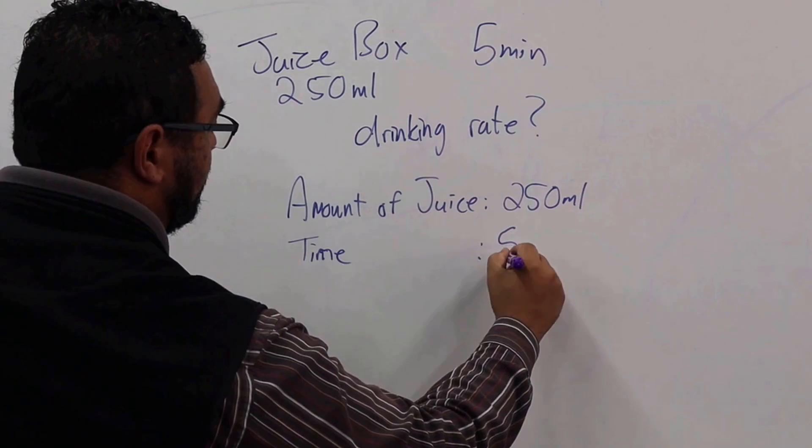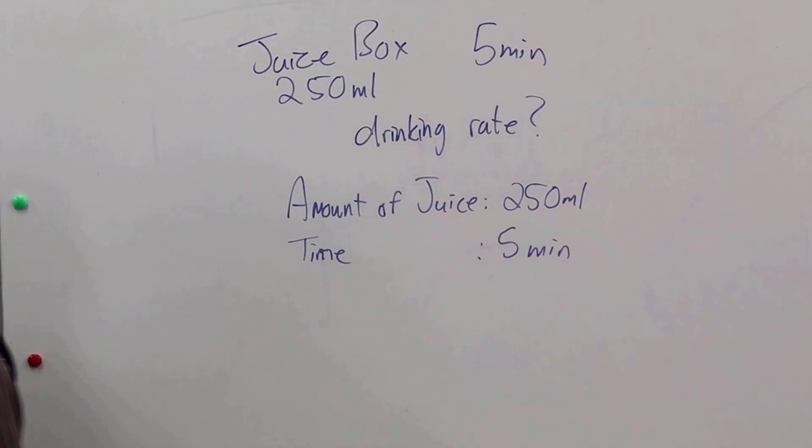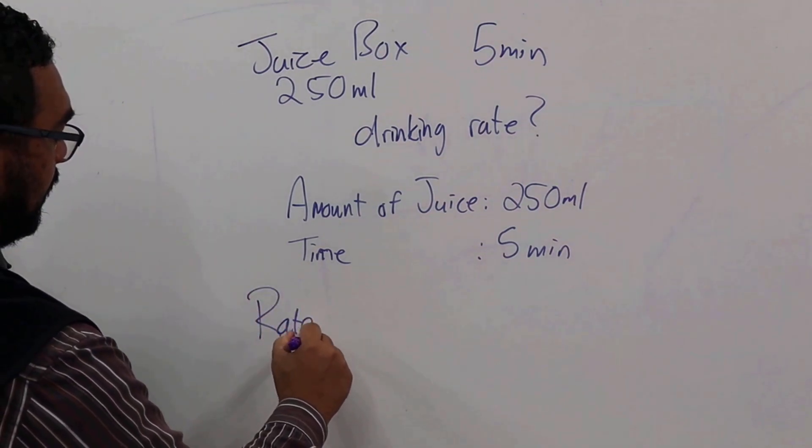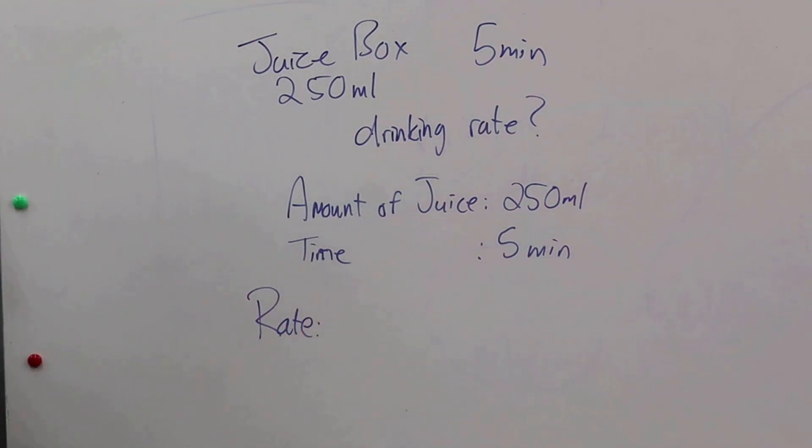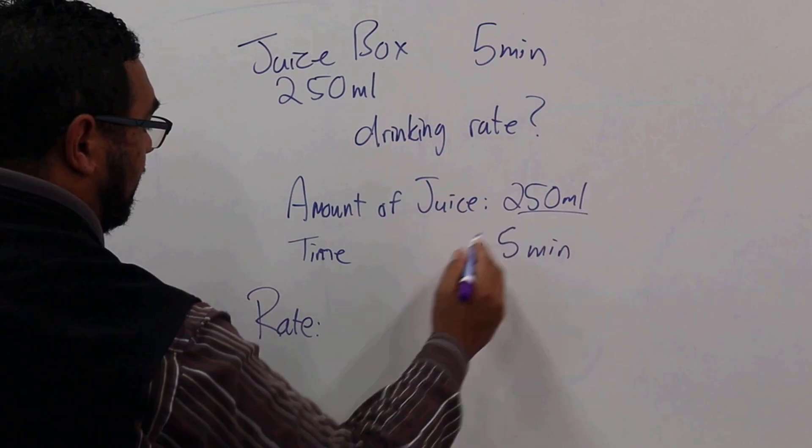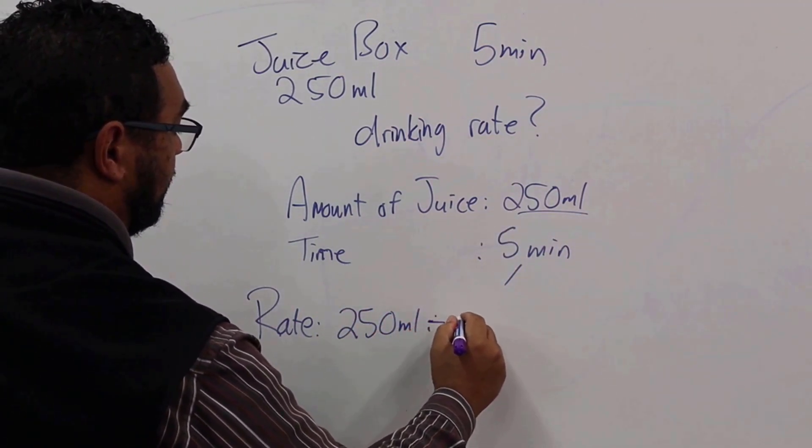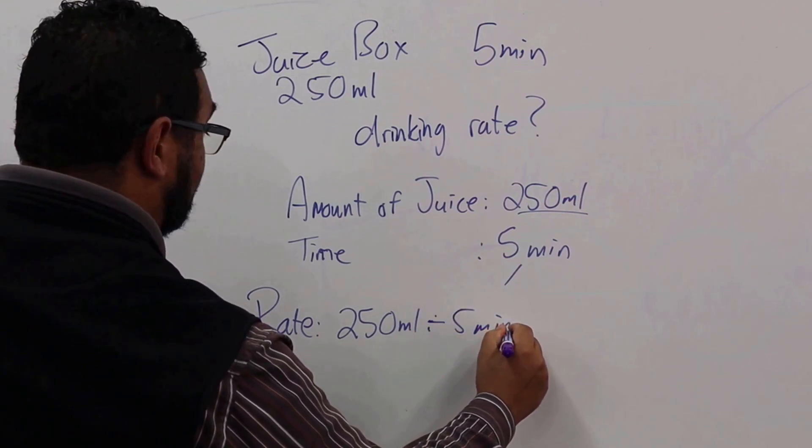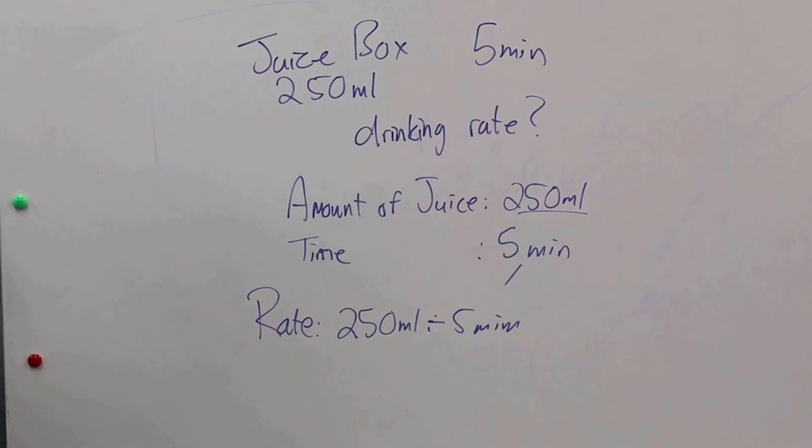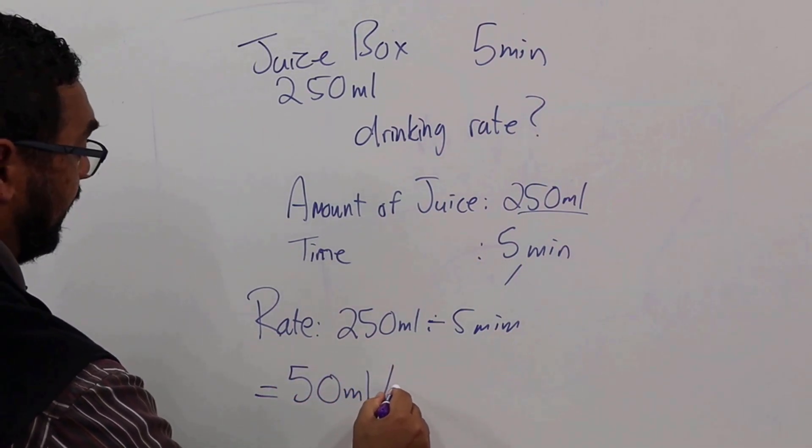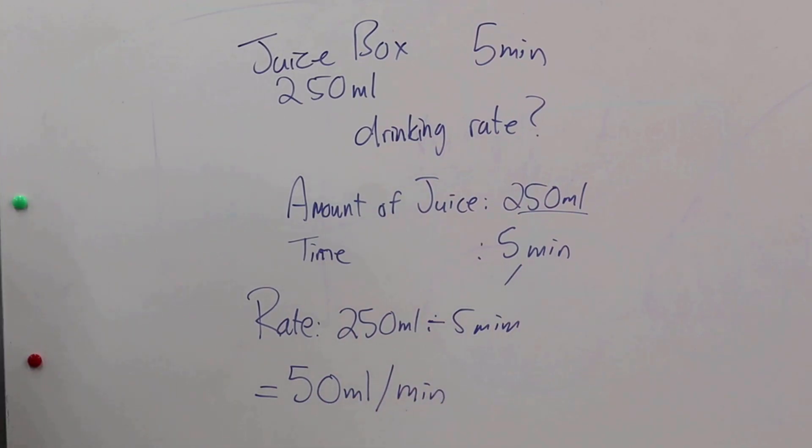And our time is five minutes. Now what we need to do is bring rate into the equation, and what's going to happen now is we're going to divide the two. So I'm going to take my 250 milliliters and I'm going to divide that by the time. And what's it going to give me? That's going to give me an answer of 50 milliliters per minute.